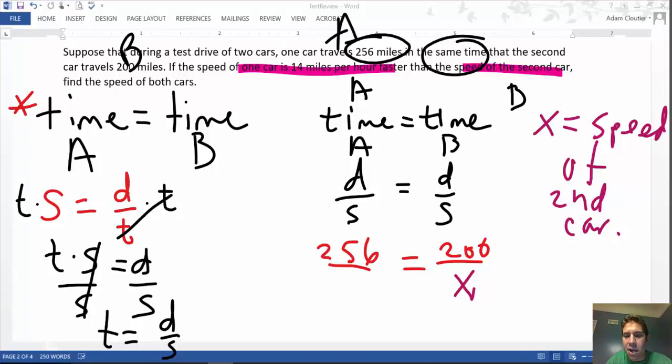So automatically, I'll put an X in that denominator. And since A is 14 miles per hour faster, remember faster is representative by addition. We will say X plus 14.